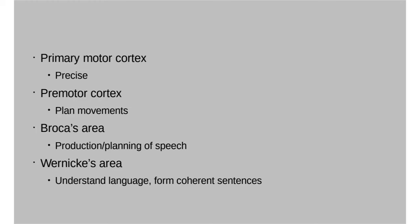Two different areas are associated with speech. Broca's area is responsible for production and planning of speech — specifically the muscles involved in producing words. This is also tied into things like sign language. Even if you're not verbally speaking, signing still involves Broca's area in the production and planning of speech.